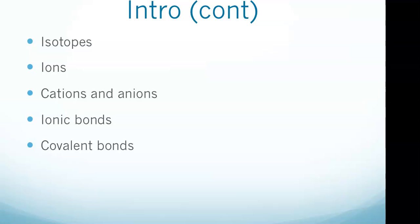Ionic bonds are a chemical bond formed between two ions with opposite charges. Ionic bonds form when one atom gives up one or more electrons to another atom. These bonds can form between a pair of atoms or between molecules and are the type of bond found in salts, for example. The key thing to remember is two ions with opposite charges.